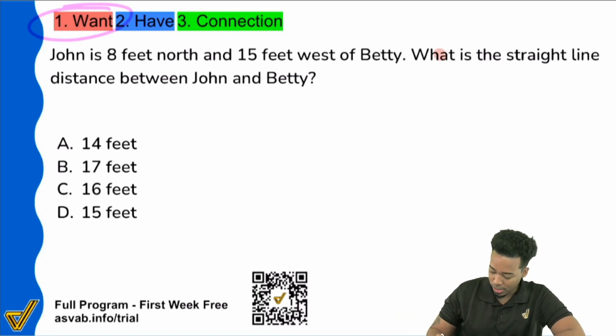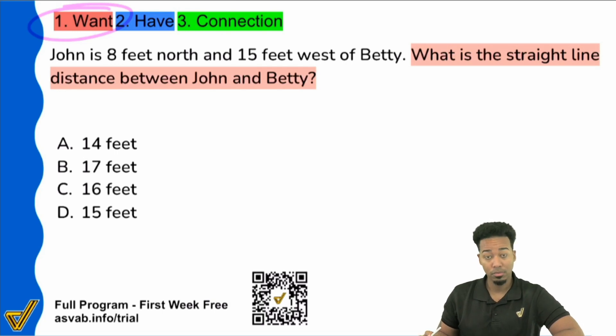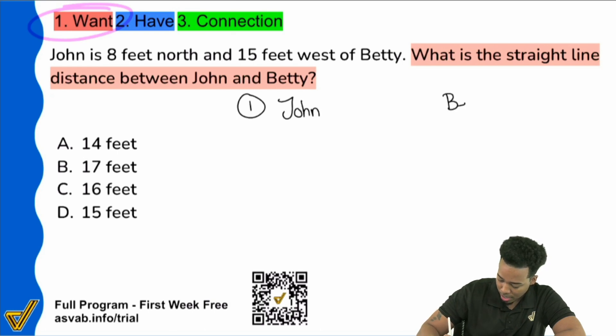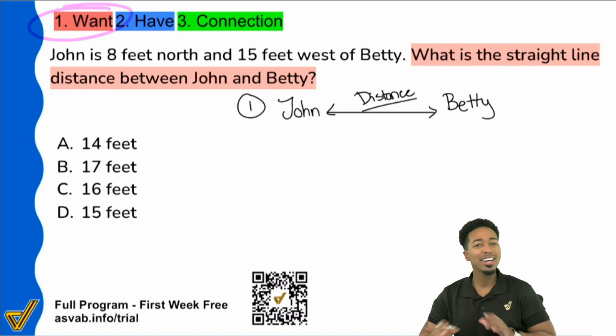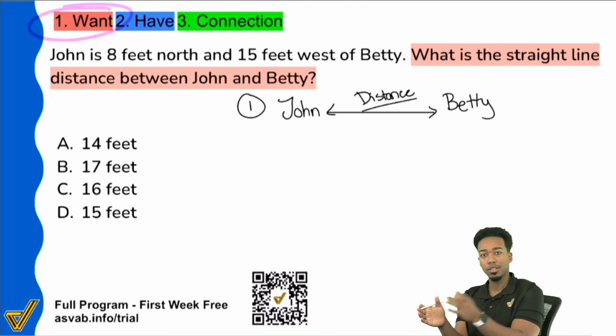So why do I care? It's right here. What is the straight line distance between John and Betty? So what I'm looking for - let's say here's John and here's Betty. I want to know the distance between John and Betty. That's all we want. We just want how far apart they are. Don't complicate things. Don't worry about it yet. Start by understanding the premise. Now we're going to collect the information and let those pieces of information clue me in on what I might need to do.